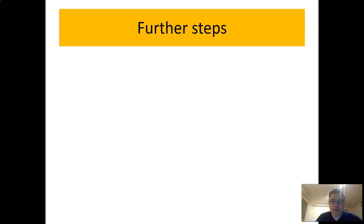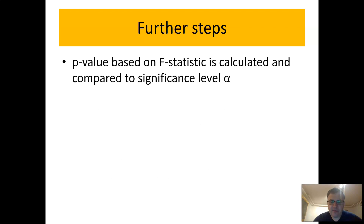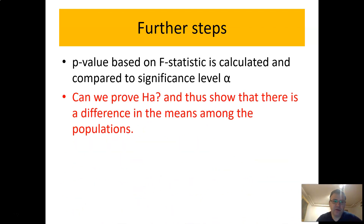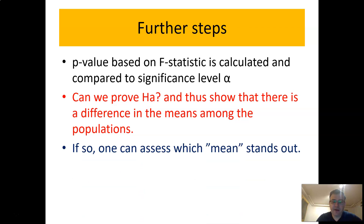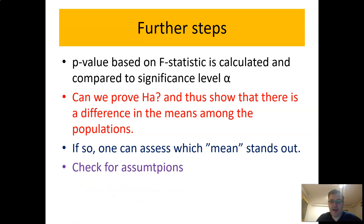For further steps, we calculate a p-value based on the F-statistic and compare it to a significance level to make a conclusion — to see whether we can prove the alternative hypothesis. If we prove H-alternative, meaning there is a difference, we then want to check which specific means are significantly different from others. Finally, we check the assumptions of the ANOVA test.